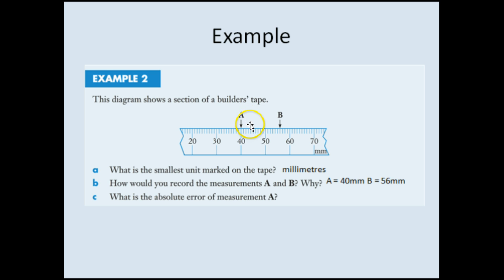So the absolute error of measurement A, remember it's half, plus or minus half the smallest unit. So we're going to go from 39.5 millimeters to 40.5 millimeters. Anywhere within that range, I would be rounding to 40 millimeters.